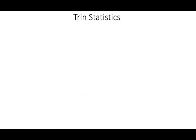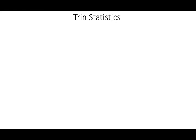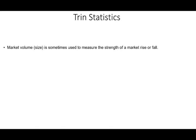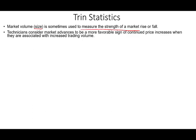Let's start with the first indicator, which is trend statistics — sometimes called the Arms Index, named after Richard Arms who created it in 1967. The trend statistics looks at volume: market volume, or the size of the market, is sometimes used to measure the strength of market rises and falls.